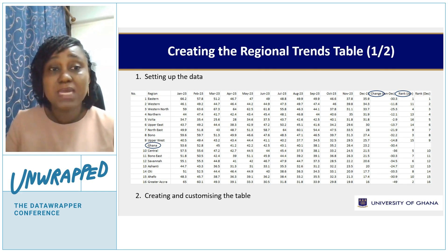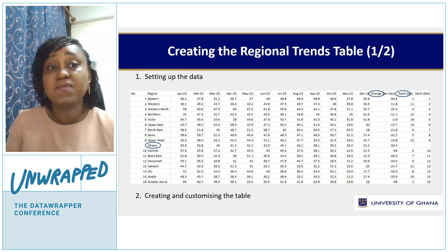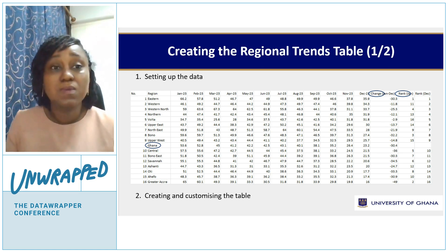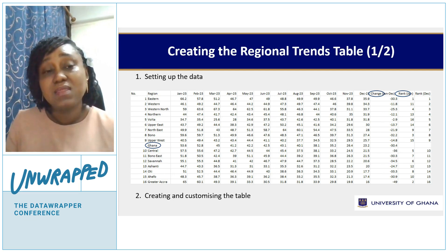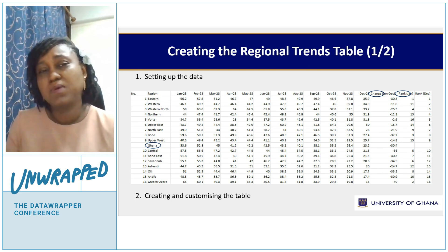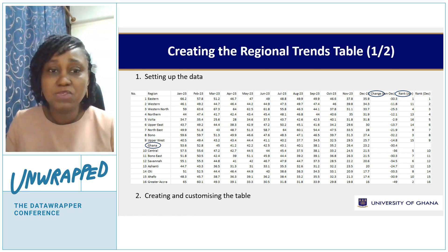Datawrapper tables can automatically rank for you, but when I add the national I don't use automatic ranking — I manually do it because I don't want the national to be ranked. So I've manually added a column for the ranking. I also add the change in values, because it's just easier for your reader if you've already done the calculations, so they can easily see what the change was over the period and how the regions' rank changed over the period.